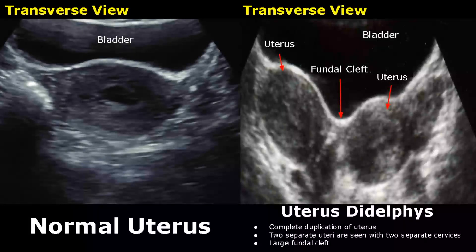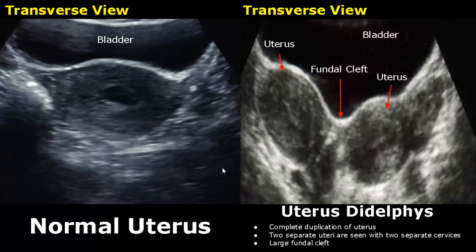Hello everyone, this is Dr. Sam and this video is about congenital uterine abnormalities on ultrasound. Congenital uterine abnormalities occur during embryonic life. These are types of Mullerian duct anomalies.